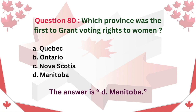Question 80: Which province was the first to grant voting rights to women? A. Quebec. B. Ontario. C. Nova Scotia. D. Manitoba. The answer is D. Manitoba.